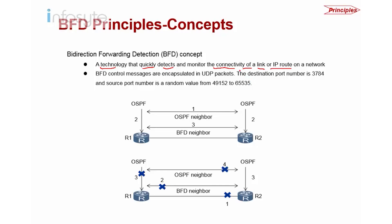You can detect at the link layer (data link) or in the network layer (IP route). BFD control messages are encapsulated in UDP, using port 3784. The source port is random. UDP is used because it doesn't add too much overhead, and the detection timer can be modified and fine-tuned.